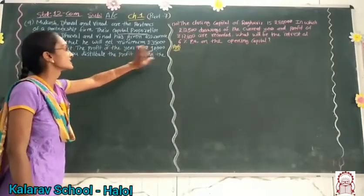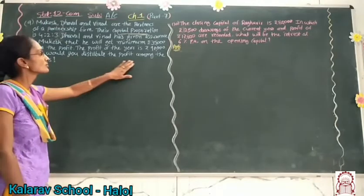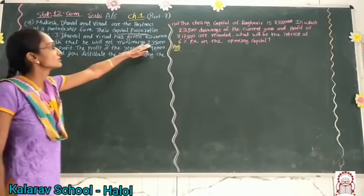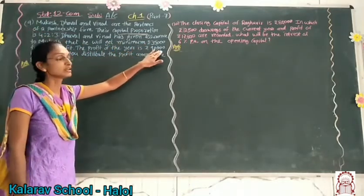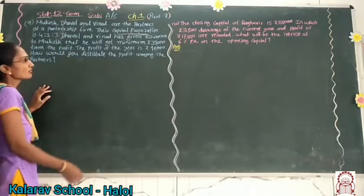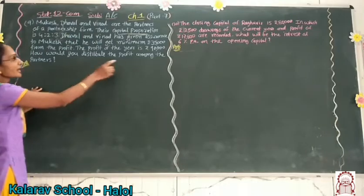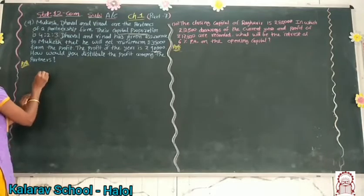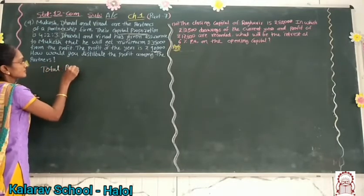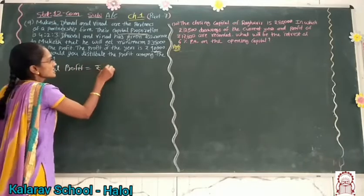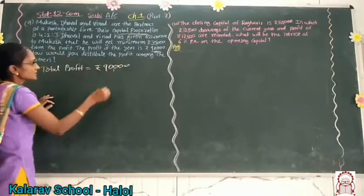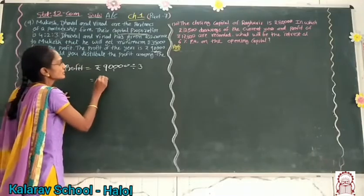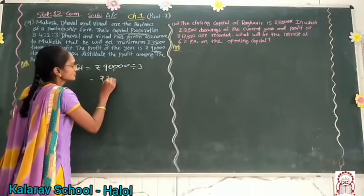The profit of the year is Rs. 90,000. How would you distribute the profit among the partners? So here the things are given: the minimum guarantee is Rs. 35,000 and total profit is Rs. 90,000. We have to divide the total profit among the 3 partners. Rs. 90,000 divided in equal proportion gives Rs. 30,000 each.